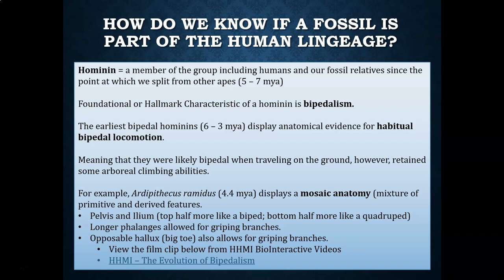Bipedalism is considered to be the foundational or hallmark characteristic of what it means to be human, meaning that this is the very first characteristic that split us from the rest of the apes. The earliest bipedal hominins that date between 6 and 3 million years ago display anatomical evidence for what we call habitual bipedal locomotion, meaning these hominins were likely bipedal when traveling on the ground or when standing on branches to reach higher hanging fruit.